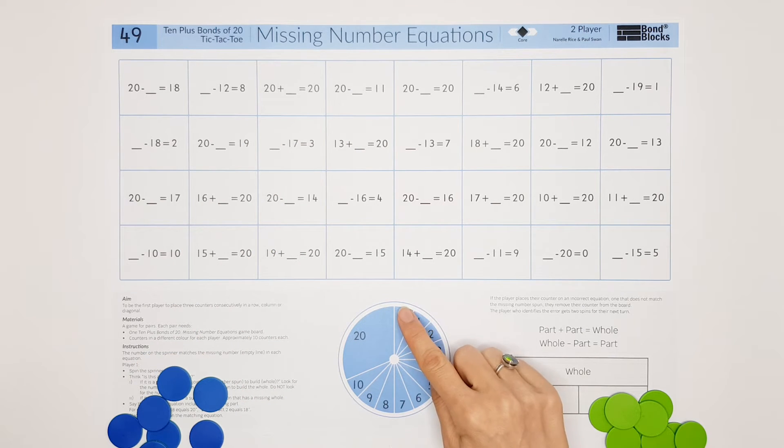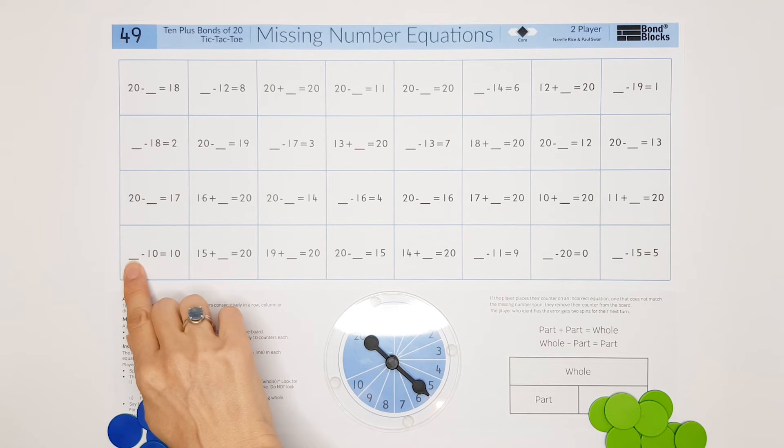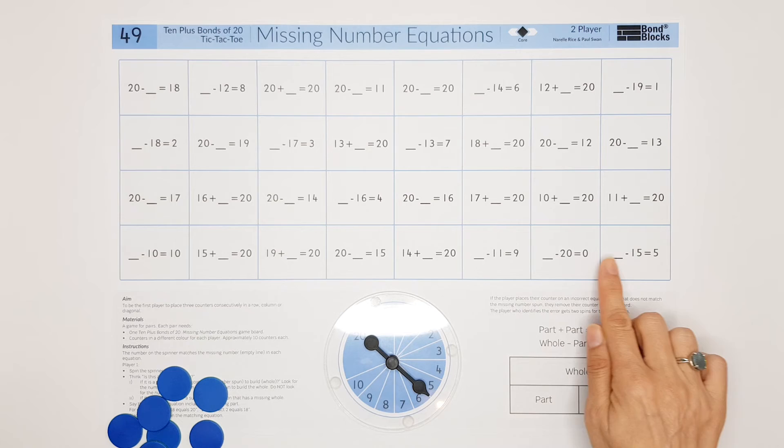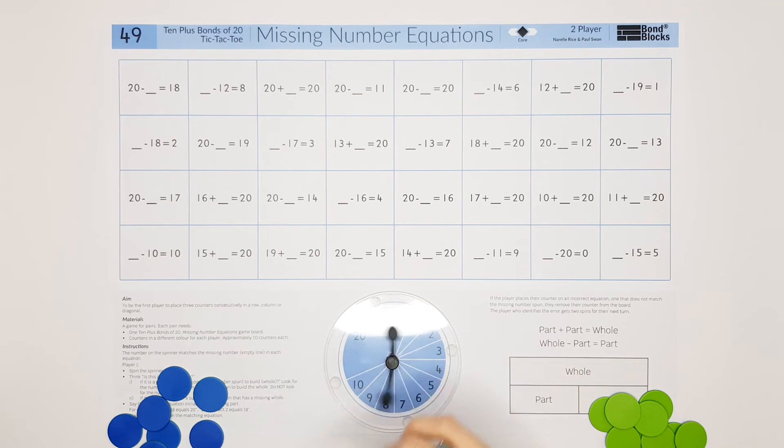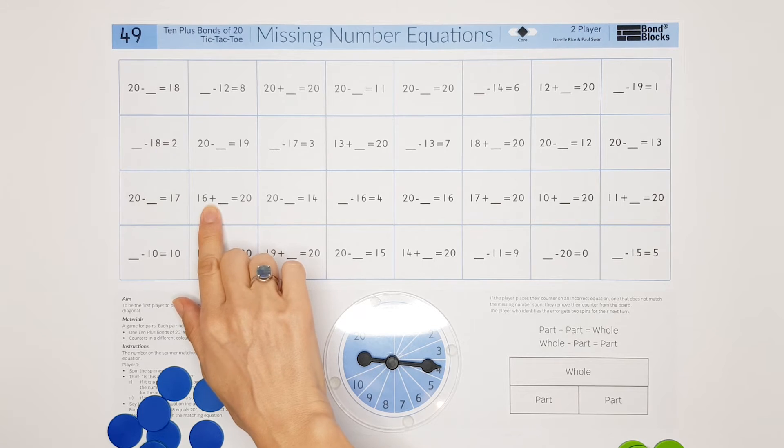When we look at the spinner, these numbers will be the parts, and for the activity this 20 would go in the whole position for subtraction. Player one goes first. They spin four, so they stop and think: I know the part four, what would join with this to build 20? That would be 16. So I'm going to scan the board for 16 and I can see one here. The four could fit here and I would say 16 add 4 equals 20. I'm going to place my counter there.